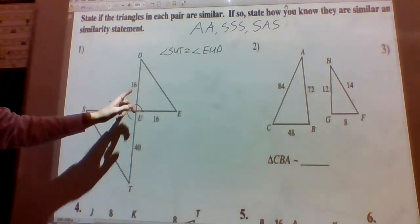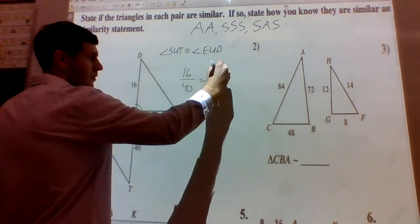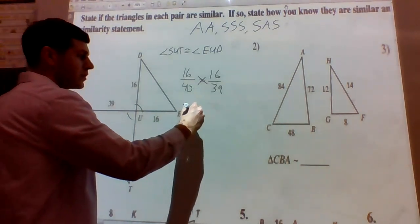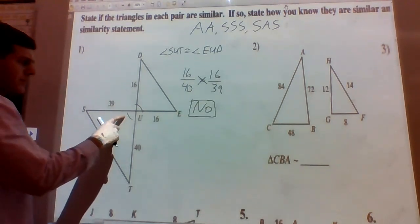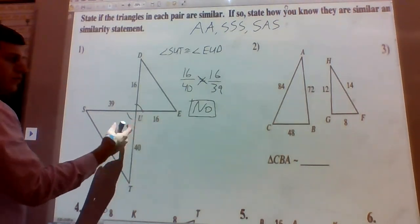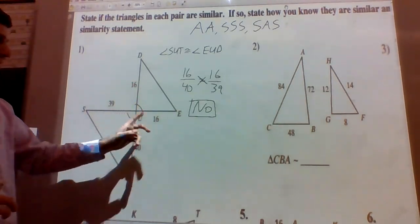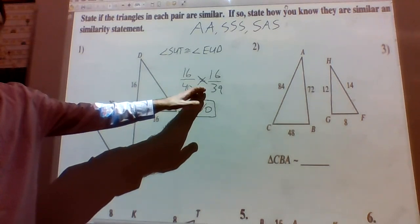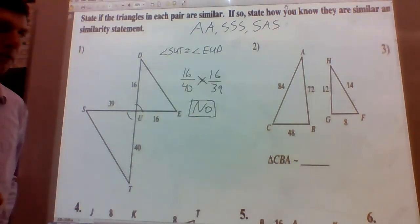Let's look for side-angle-side. We look at our sides: we get 16 over 40 and 16 over 39. Those two are not equal. Since the ratios of those corresponding sides are not equal, we can conclude that the triangles are not similar. So our answer here is no. In either case, since these are both 16, you get 16 and 39 and 16 and 40. If the ratios are not equal, the sides are not proportional, and the triangles are not similar.